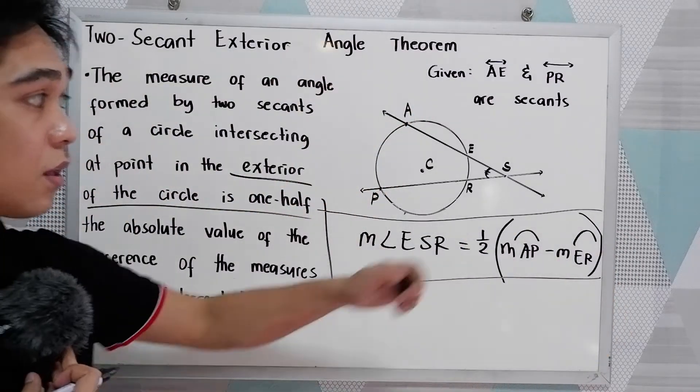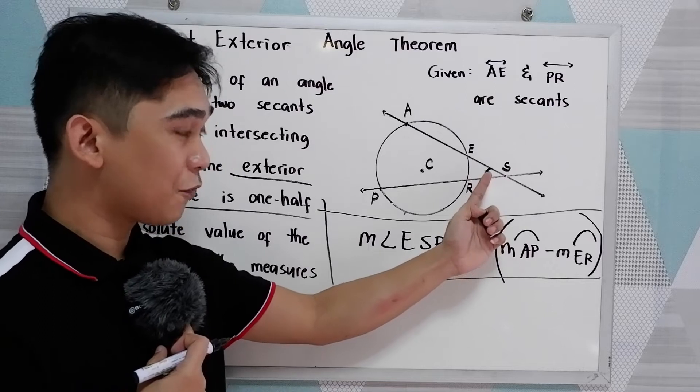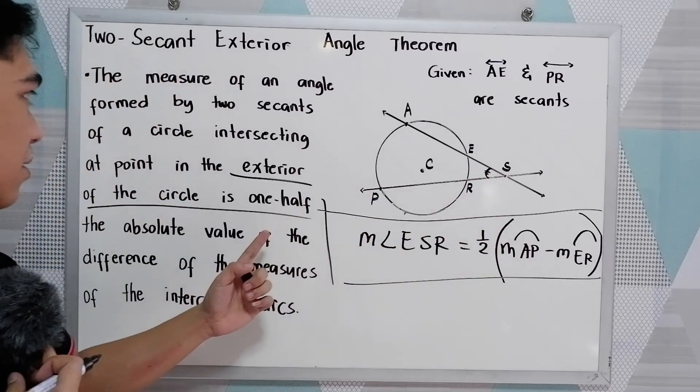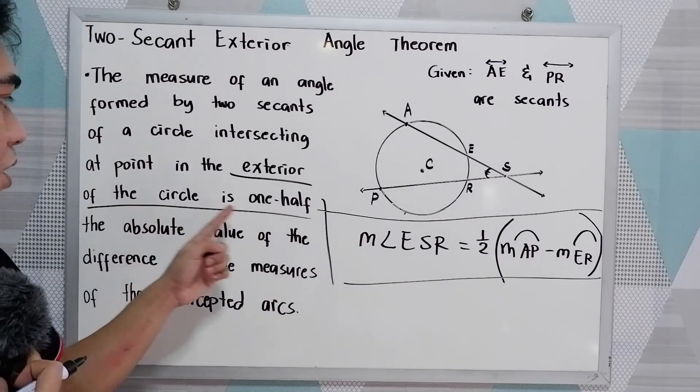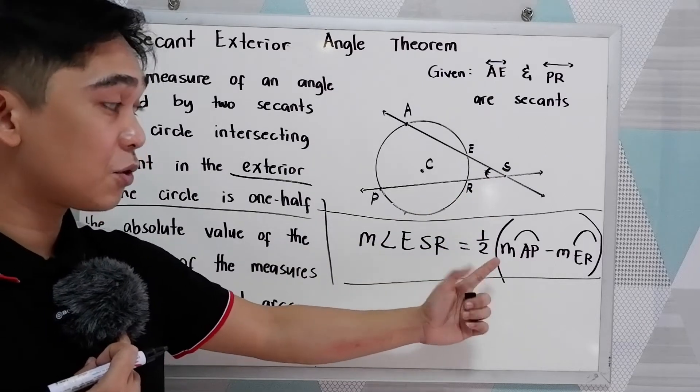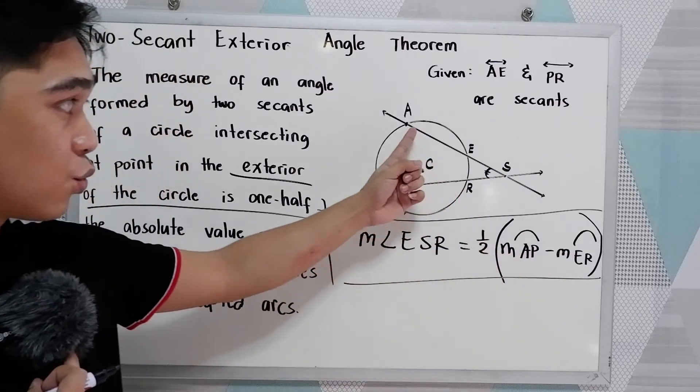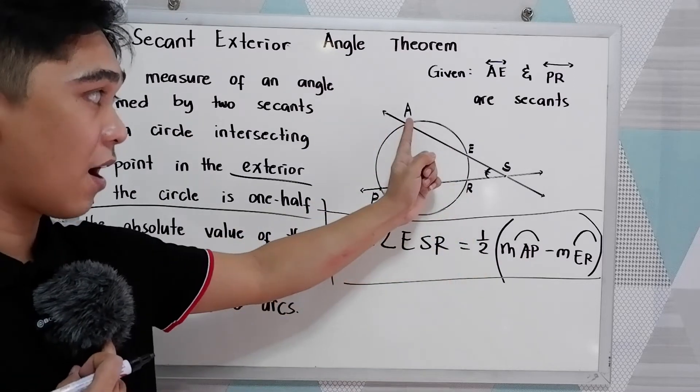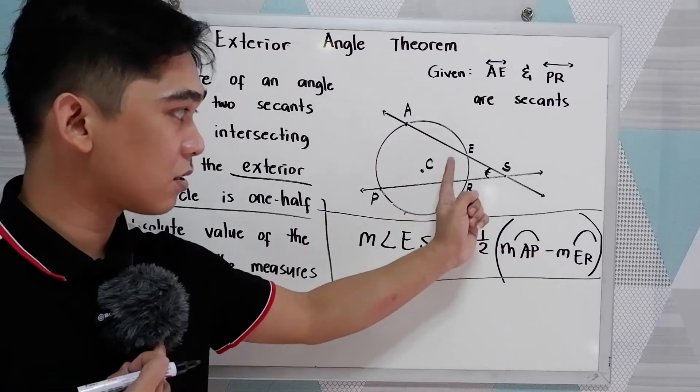Let us repeat. The measure of the angle formed in the exterior of the circle is one half the absolute value of the difference of the two intercepted arcs. We have arc AP minus arc AR.